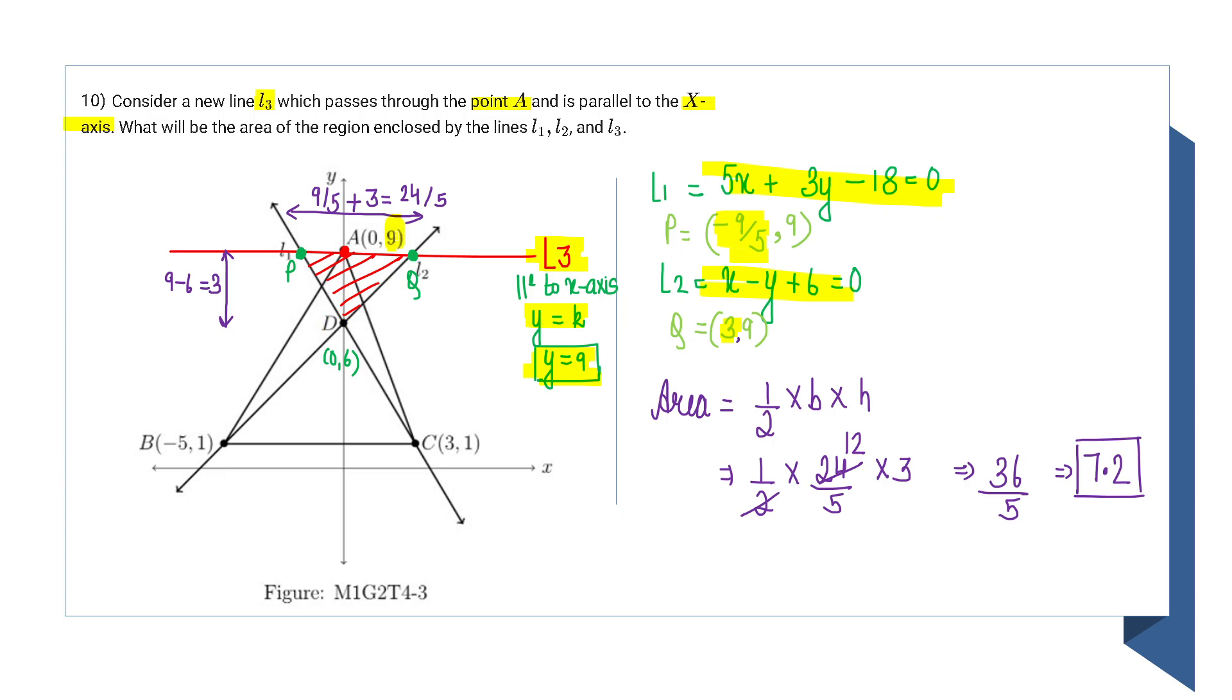My height will be 9 - 6 = 3. And what will be my base? The x-coordinate of Q minus the x-coordinate of P, that will be the base.